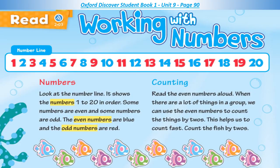Page 90. Read: Working with Numbers. Numbers — look at the number line. It shows the numbers 1 to 20 in order. Some numbers are even and some numbers are odd. The even numbers are blue and the odd numbers are red.